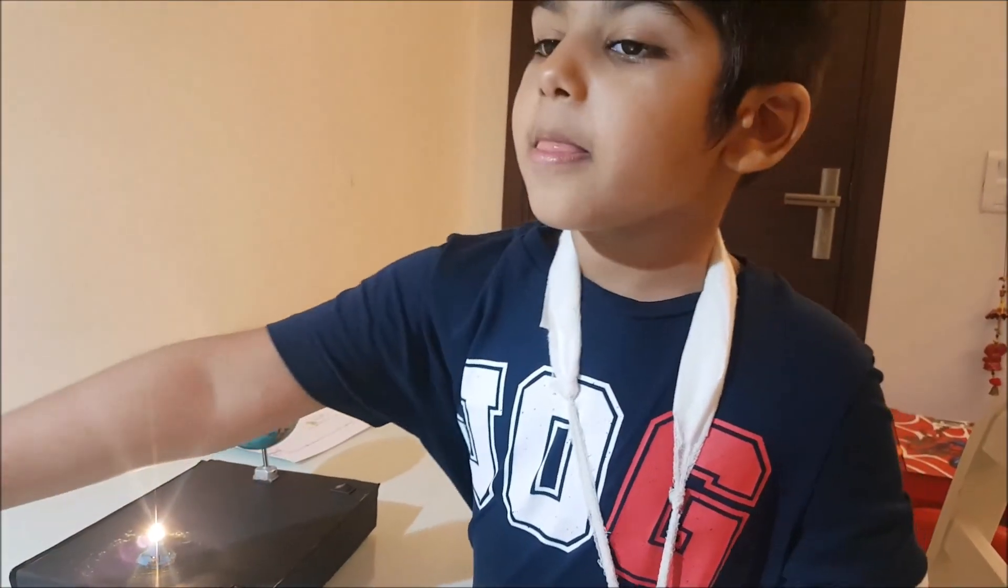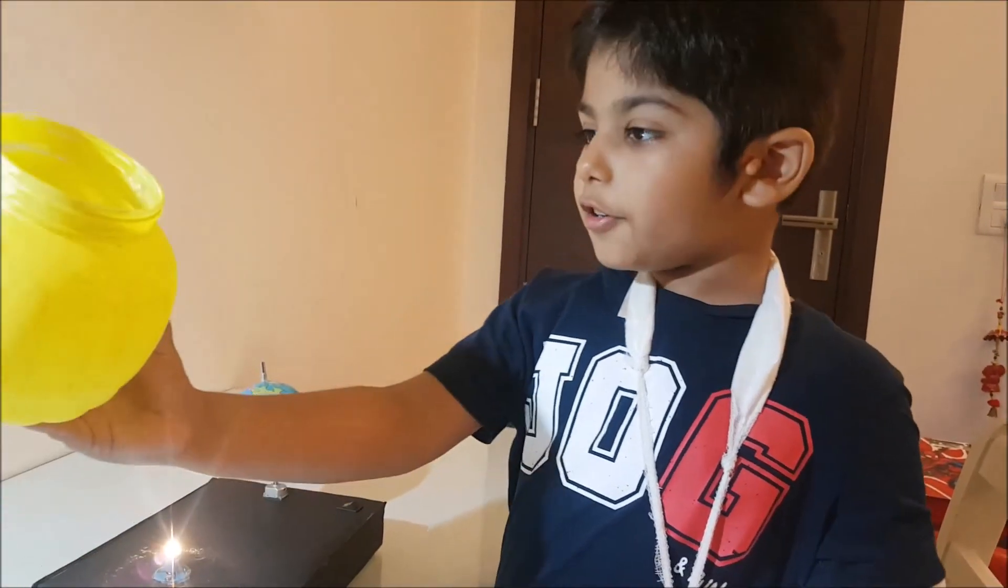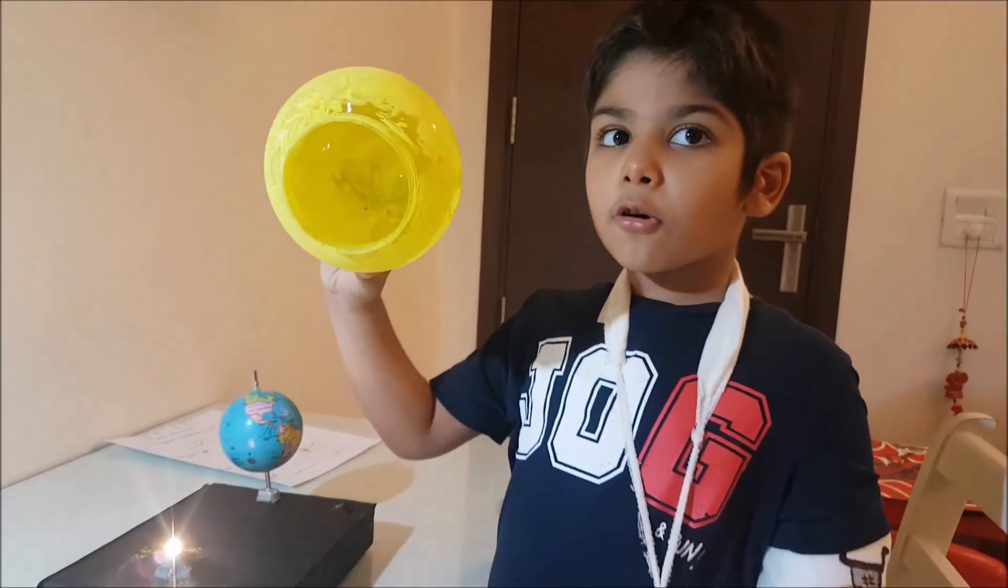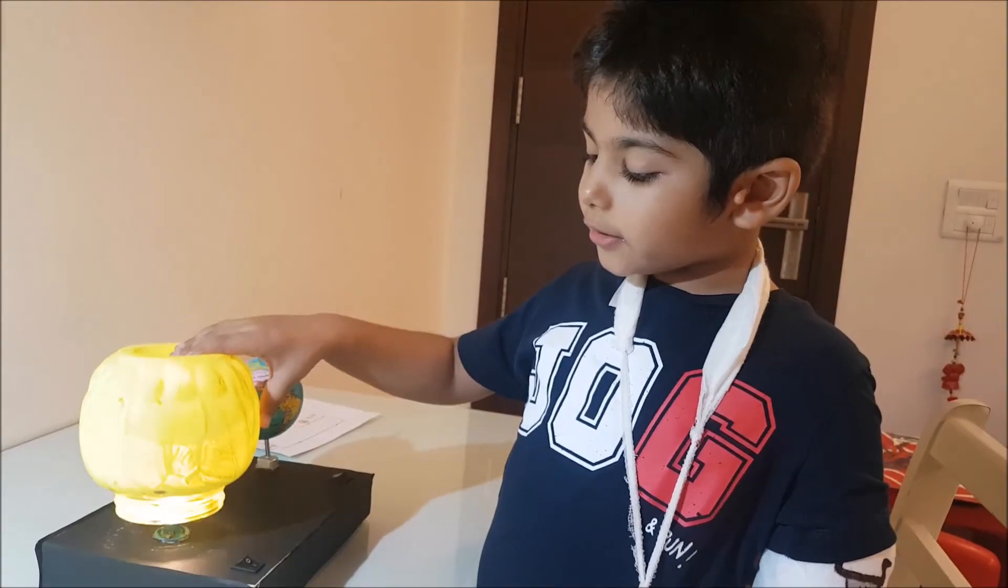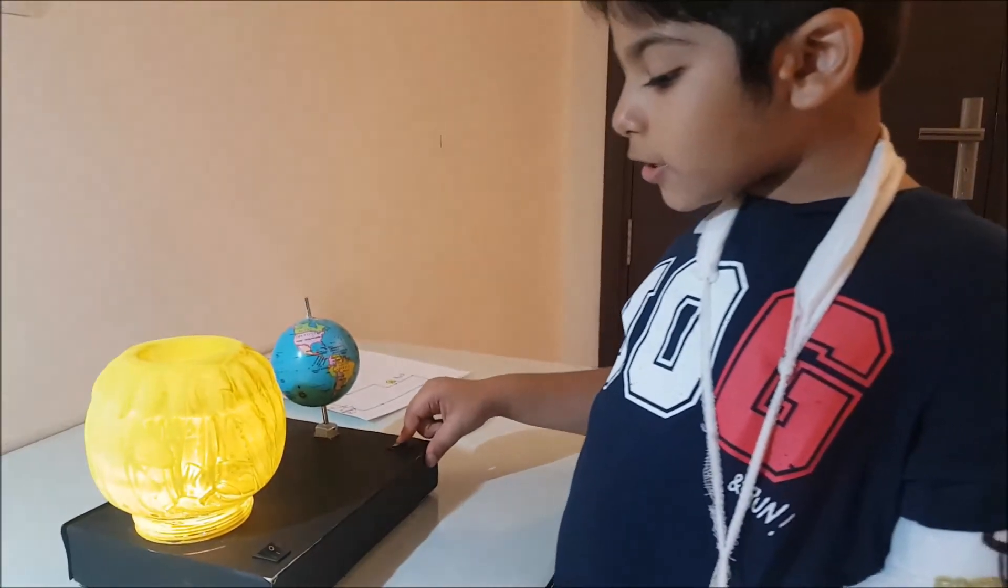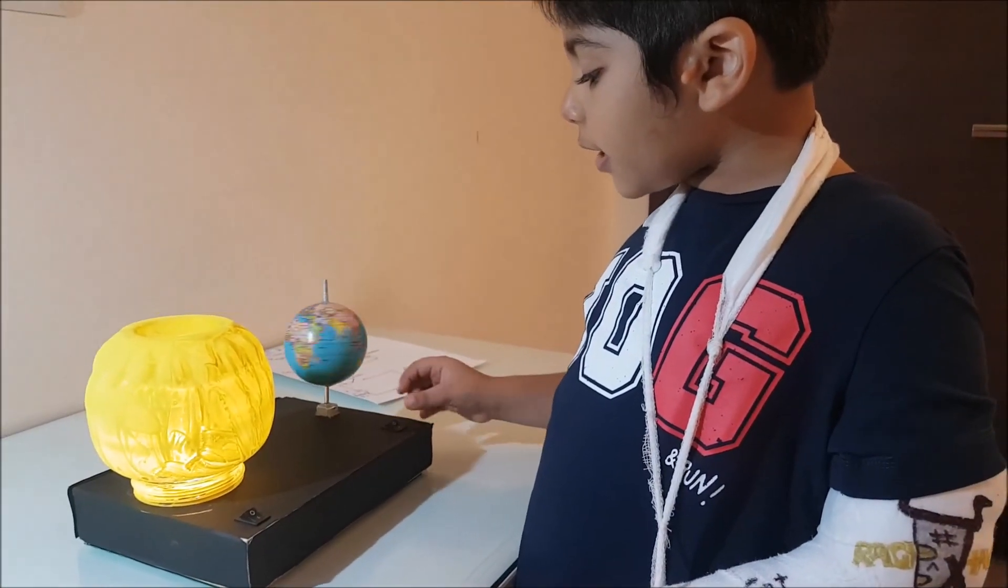And then, this is the container. It is painted yellow and this will be the sun. Put it right here and there is a switch here. Alright, let's do it! It will rotate.